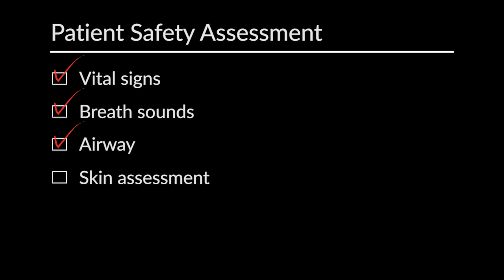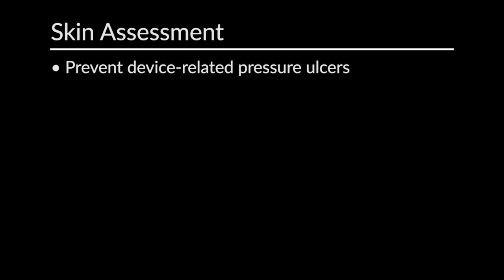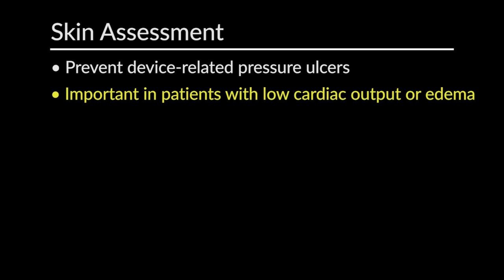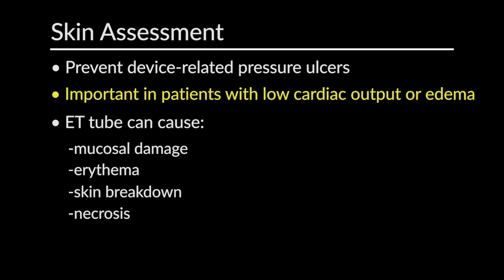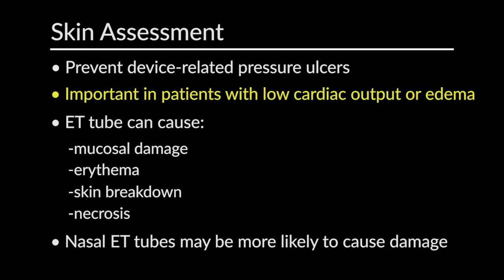Next, we will move on to the skin assessment. We want to assess the skin to prevent device-related pressure ulcers. This is especially important in patients with low cardiac output states or severe edema. Endotracheal tube placing pressure on the lips can cause mucosal damage, erythema, breakdown, and in severe cases, necrosis. This is especially true with nasal intubations, as it is a highly vascular area and is prone to being torqued and having many more pinch points depending on how the tube is fixated to the patient.